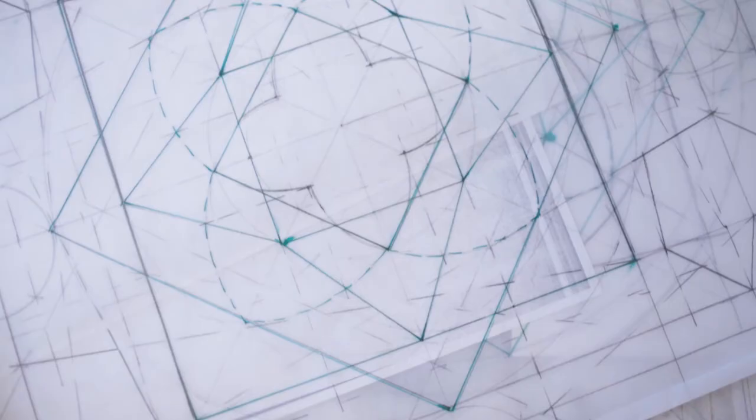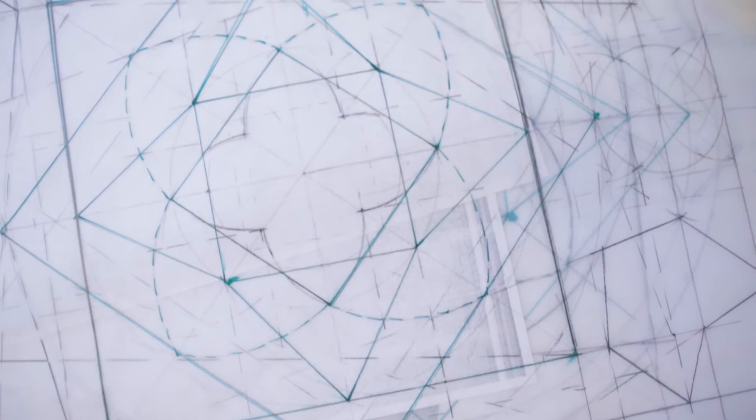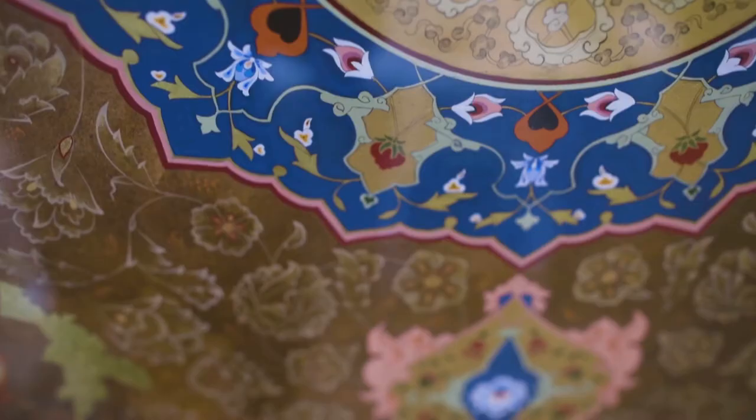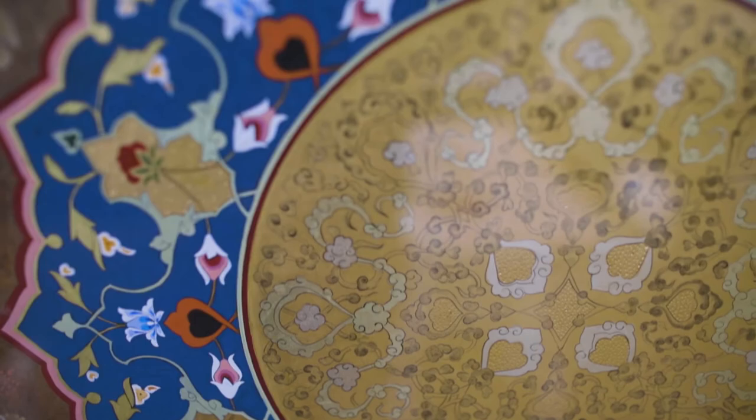One of the motif groups that I've used here, which is biomorphics, is called hatai. And within these motif groups you have different flowers. So you have gunchukul, which is the bud form, and then you have the pench, which is a bird's eye view of the flower.